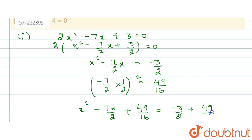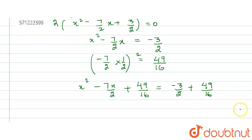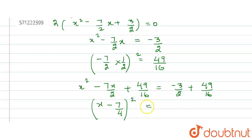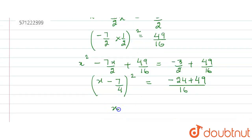Simplifying further, on the left hand side, since x has a negative sign, we get the whole square: (x minus 7/4)². On the right hand side, taking the LCM with 16 gives minus 24 plus 49 divided by 16. After simplification: (x minus 7/4)² equals 25/16.